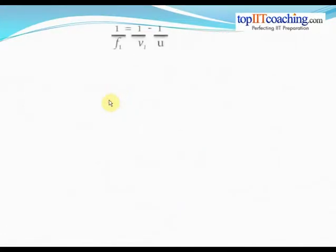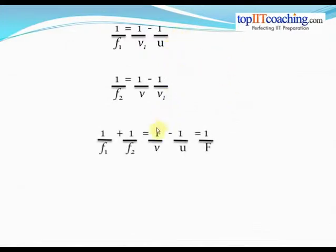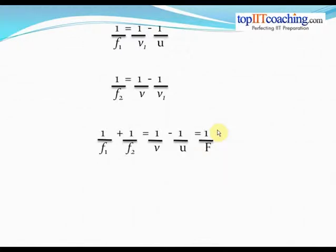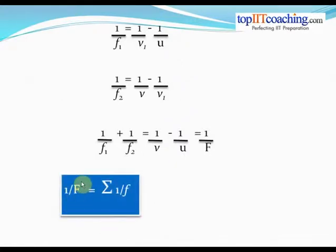Now let's add these two equations. When you add both equations, you get a very simple expression. The 1/v1 terms cancel, so 1/f1 + 1/f2 = 1/v − 1/u, which is the same as 1/F, the final focal length of the lens system. So when two lenses are in contact, 1/F = 1/f1 + 1/f2. Even if you have three, four, or five lenses, 1/F = Σ(1/f) — it's the sum of the reciprocals of all individual focal lengths. Simple, isn't it?